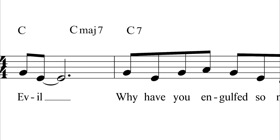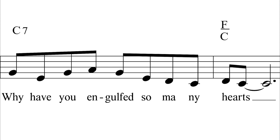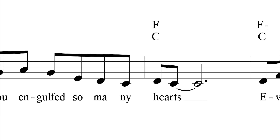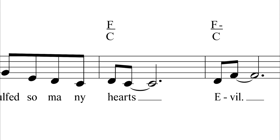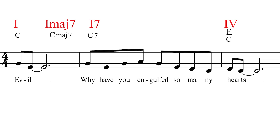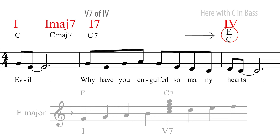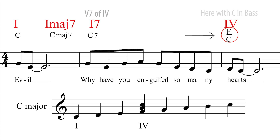Example one: Evil, from Music of My Mind, 1972. This example is conveniently in C major. So the C major triad becomes a C major seven, then it goes to C7. This in turn becomes the V7 dominant of F major — the four chord. But Stevie has not modulated; this is just a move to the four major chord in C major.